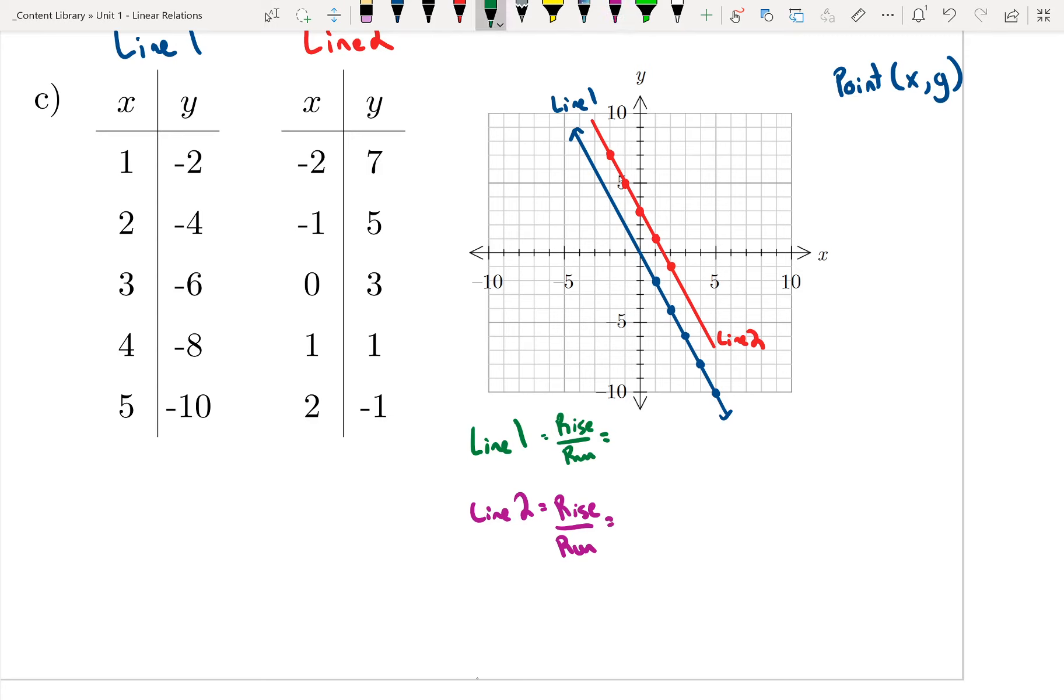So for line 1, I'm just going to pick two points. I'm going to pick the first and last point. So going from one point down to the next. So my rise is going to be negative. It will be negative 8 and my run will be positive 4. So negative 8 over 4 is negative 2.